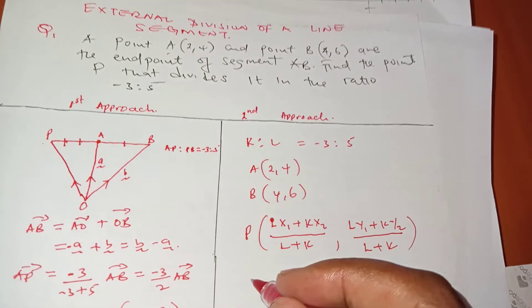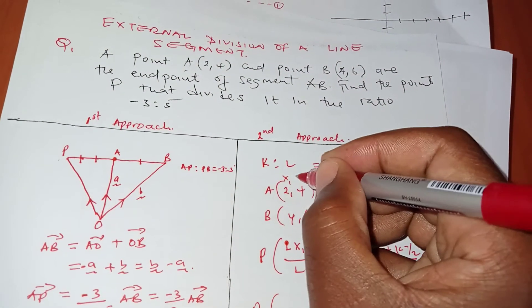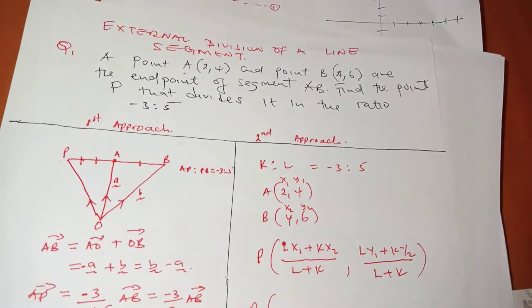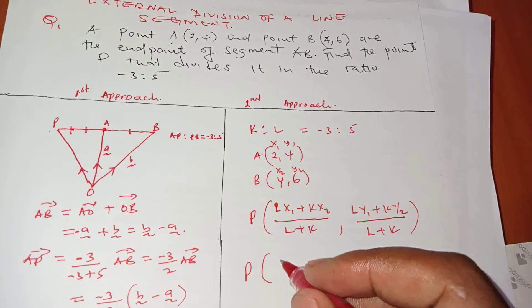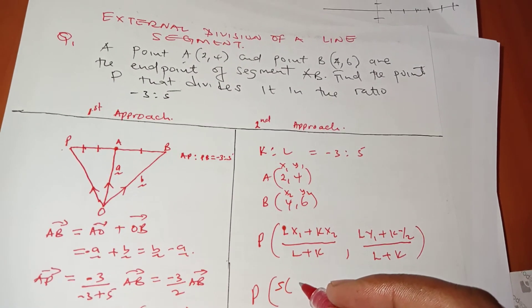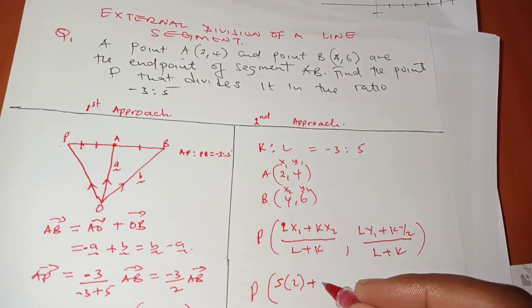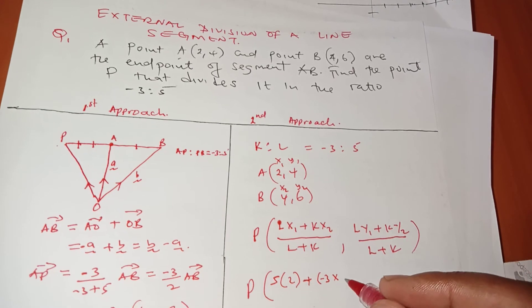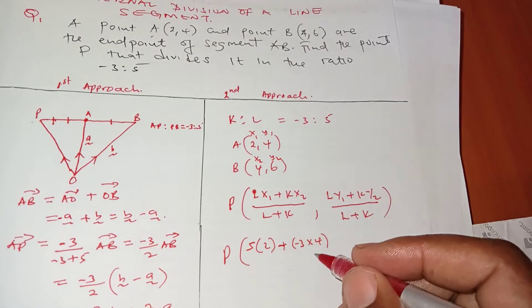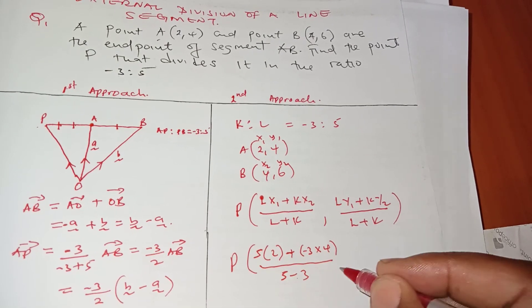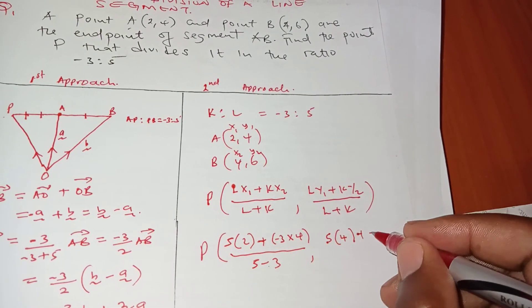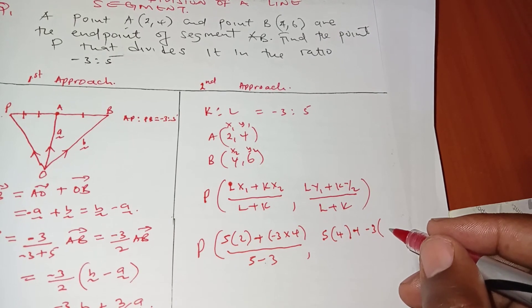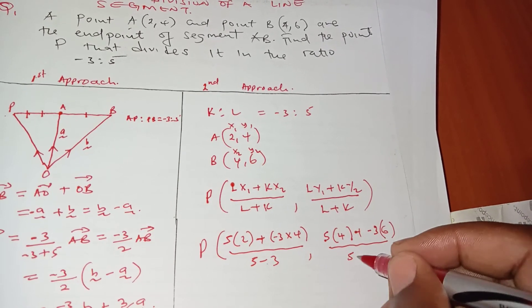If you look at that, then substitute what you have. This is my X₁, Y₁, X₂, Y₂. The order doesn't matter, which is why even if you have a negative here or here, that order is immaterial. Let's substitute: L is 5 times X₁ which is 2, plus K is -3 times X₂ which is 4, and the sum is 5 - 3. Then 5 times 4, plus -3 times Y₂ which is 6, over the sum.